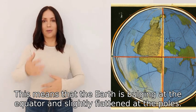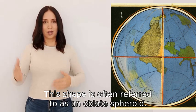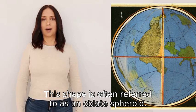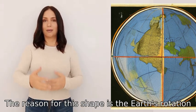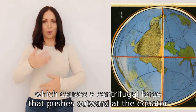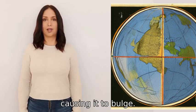It is slightly flattened at the poles. This shape is often referred to as an oblate spheroid. The reason for this shape is the Earth's rotation, which causes a centrifugal force that pushes outward at the equator, causing it to bulge.